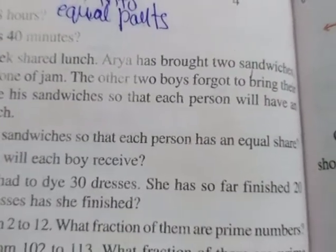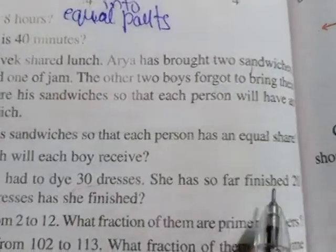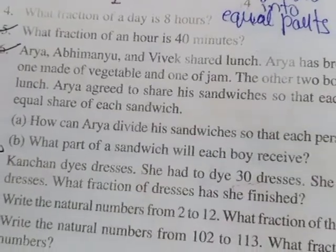She has to complete 30 dresses and she has already completed 20 dresses. What fraction has she finished? Very simple.